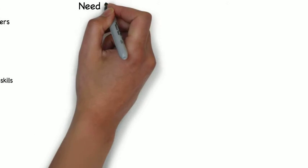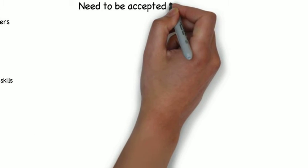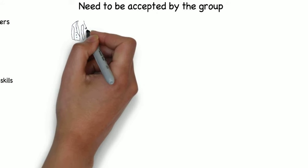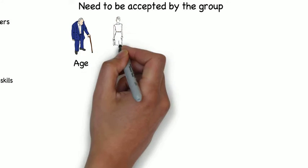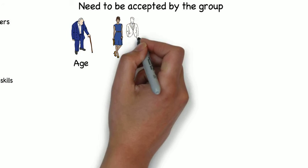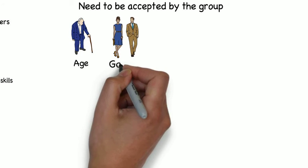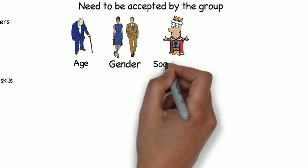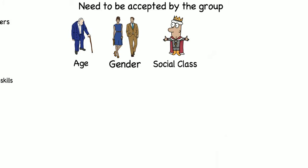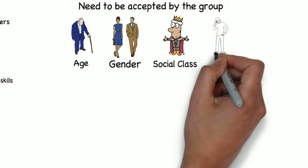If the initial contact does go well, then the researcher must gain acceptance from the group. This may prove difficult as some groups are often suspicious of new members, and some won't accept you due to your age, gender, class, or ethnicity.